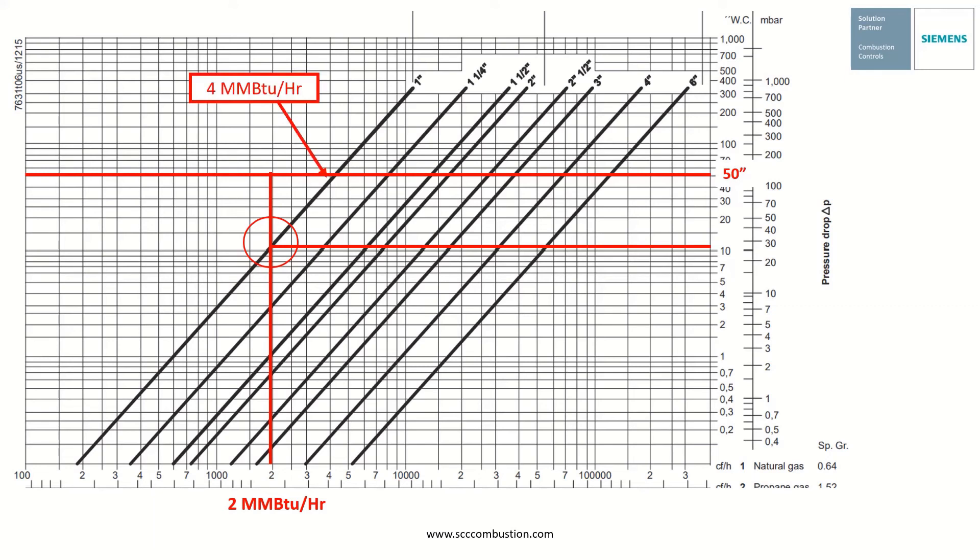For reference, under these same pressure conditions, a 1 inch double valve can flow up to 4 million BTU per hour. A typical 4 million BTU per hour gas train would use a 2 inch double valve. And now with the SKP25, we would use a 1 inch double valve. So you can see the difference.